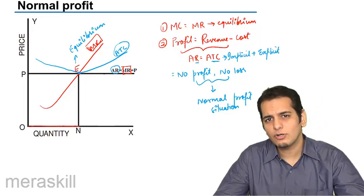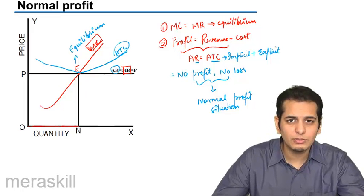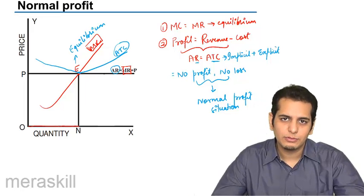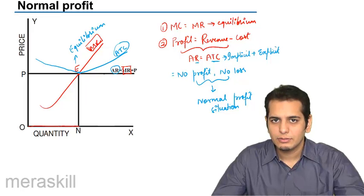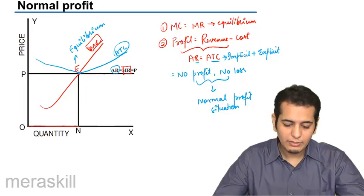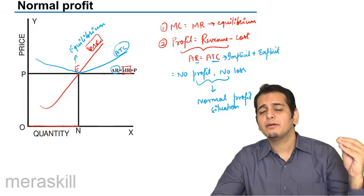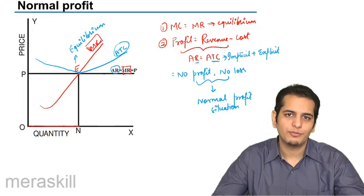So it includes both implicit as well as explicit cost. Explicit cost is the cost that you are actually incurring, the tangible cost, the expenses that you are making. Implicit cost is these factor revenues, that is revenue for land, labor, capital, and enterprise. So at the point E you are just barely recovering all this. So it is a situation of normal profits.